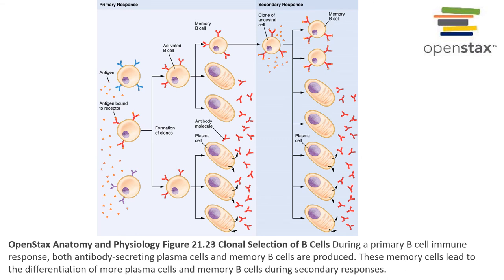Vaccination works similarly to natural exposure to the pathogen; however, with vaccination you don't risk developing the illness. The immune system will still respond to the antigen contained within the vaccine, and this will stimulate the adaptive immune response, producing memory B cells through the process of clonal selection.